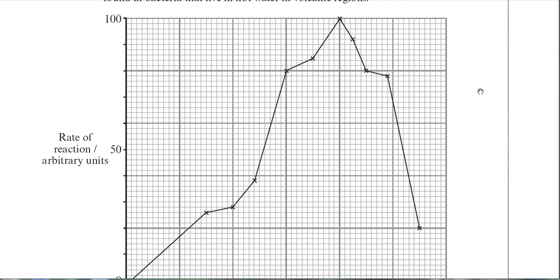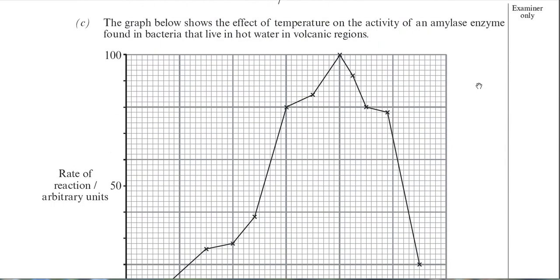Part C — we have another graph here. The examiner says: the graph below shows the effect of temperature on the activity of an amylase enzyme found in bacteria that live in hot water in volcanic regions. That statement is packed full of relevant information. We're now looking at the effect of temperature on enzyme activity. The enzyme is amylase, and it's found in bacteria.